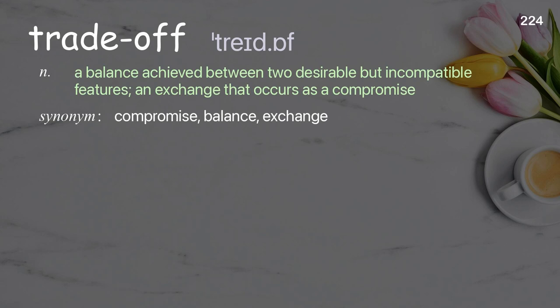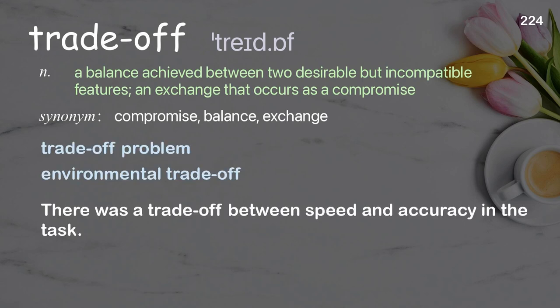Trade-off: a balance achieved between two desirable but incompatible features; an exchange that occurs as a compromise. Examples: trade-off problem, environmental trade-off. There was a trade-off between speed and accuracy in the task.